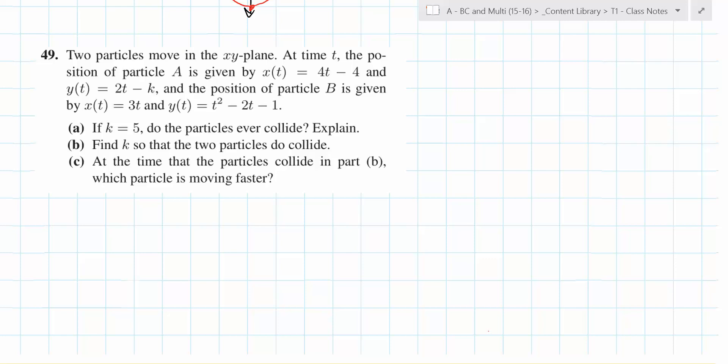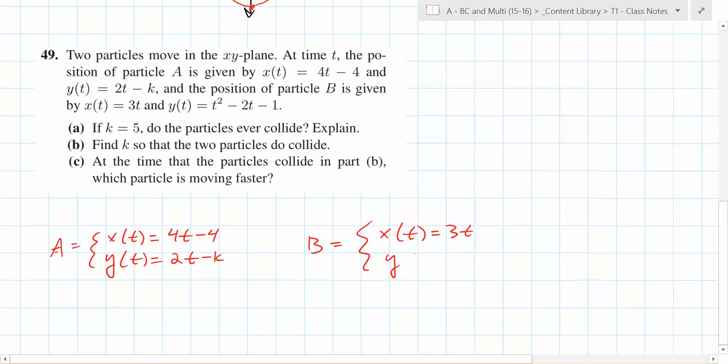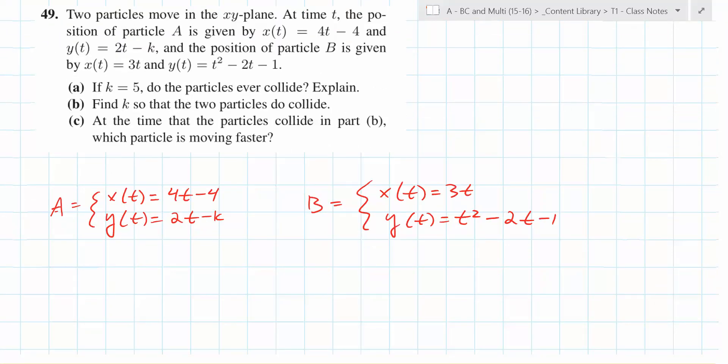At the same time. They're at the same place at the same time. Same place at the same time. Which one's particle A? We have A is going to be x of t is 4t minus 4. And what's y of t? 2t minus k. And what's b? x of t is 3t and y of t is t squared minus 2t minus 1. Nice. So it says if k equals 5, do they ever collide? So let's just plug in 5 right here. So they have to be at the same place at the same time.